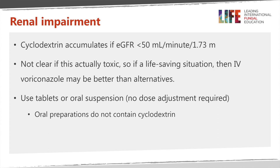This drug doesn't go out through the kidneys, but the IV formulation uses cyclodextrin as an excipient, and cyclodextrin is excreted through the kidneys. When Pfizer first developed voriconazole they recommended not using it in patients with impaired renal function because it wasn't clear how toxic cyclodextrin actually is. It's now clear that cyclodextrin isn't so bad for a limited period, so if patients have a life-threatening infection with some renal impairment, a short course of IV voriconazole is probably not a problem. However, extended IV therapy may still be a concern. The tablets and suspension don't contain cyclodextrin, so there's no problem with those in renal impairment.